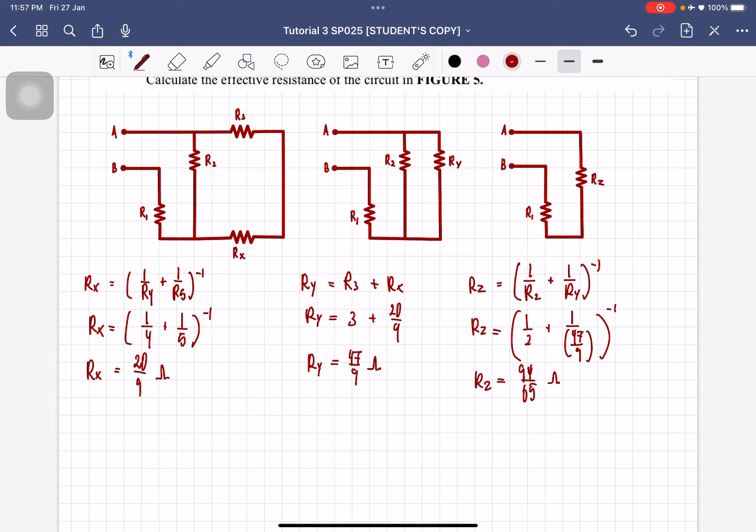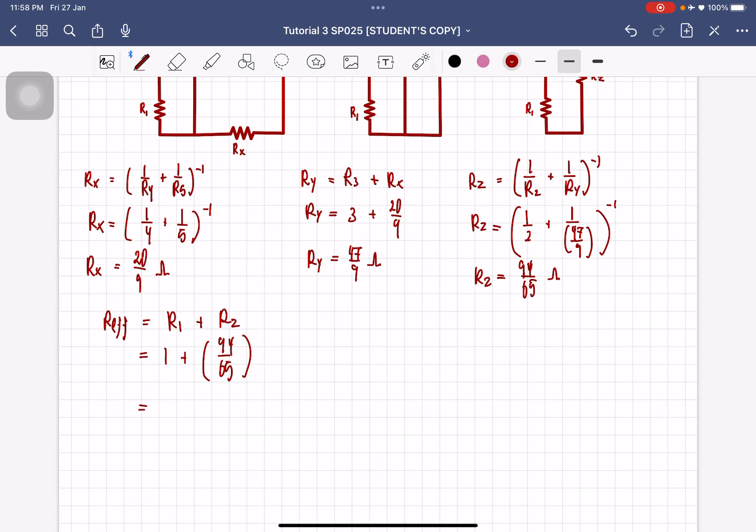Okay, so from here, we are left with 2 resistors, so this is finally the effective resistance, which is in series, so it will just be the addition of these two resistors, so it will be equal to R1 plus 94 over 65, which will then be equal to 2.45 ohm.